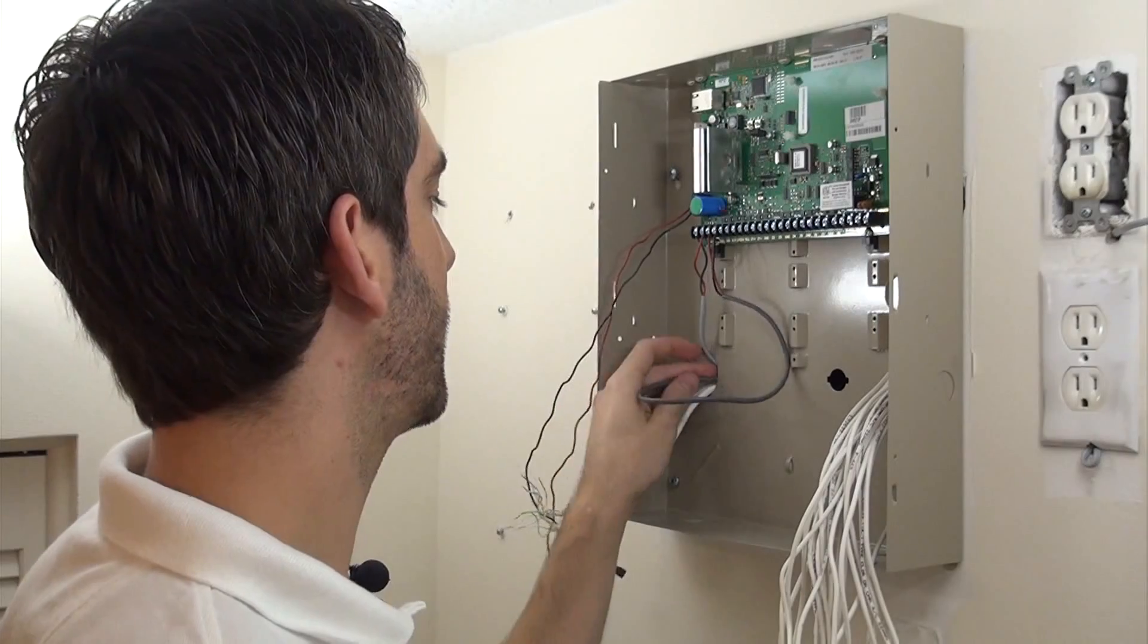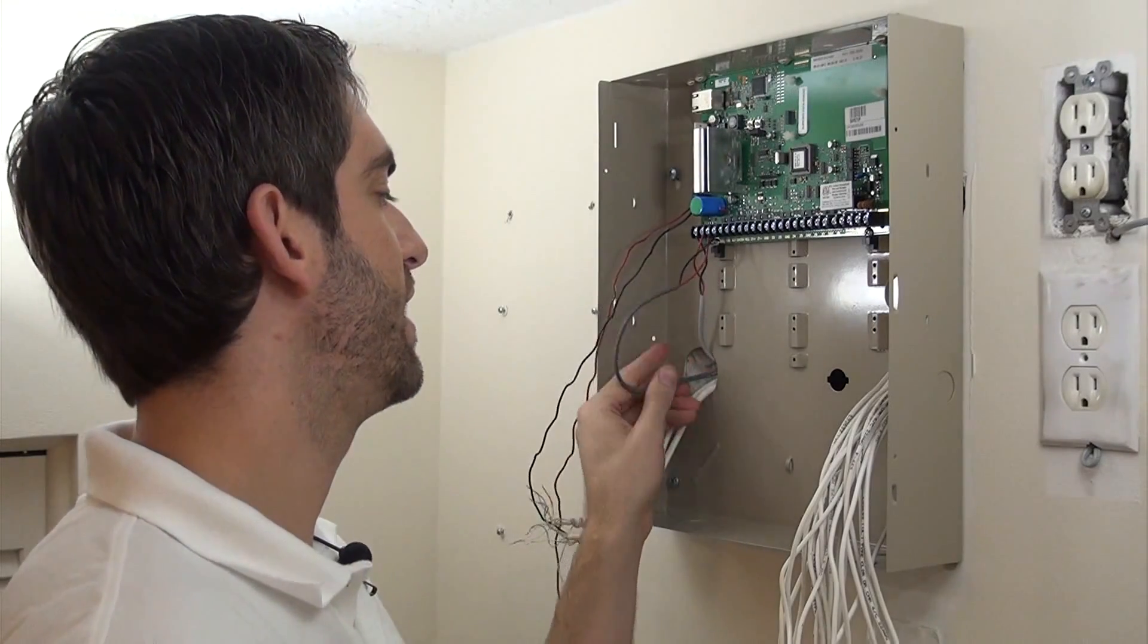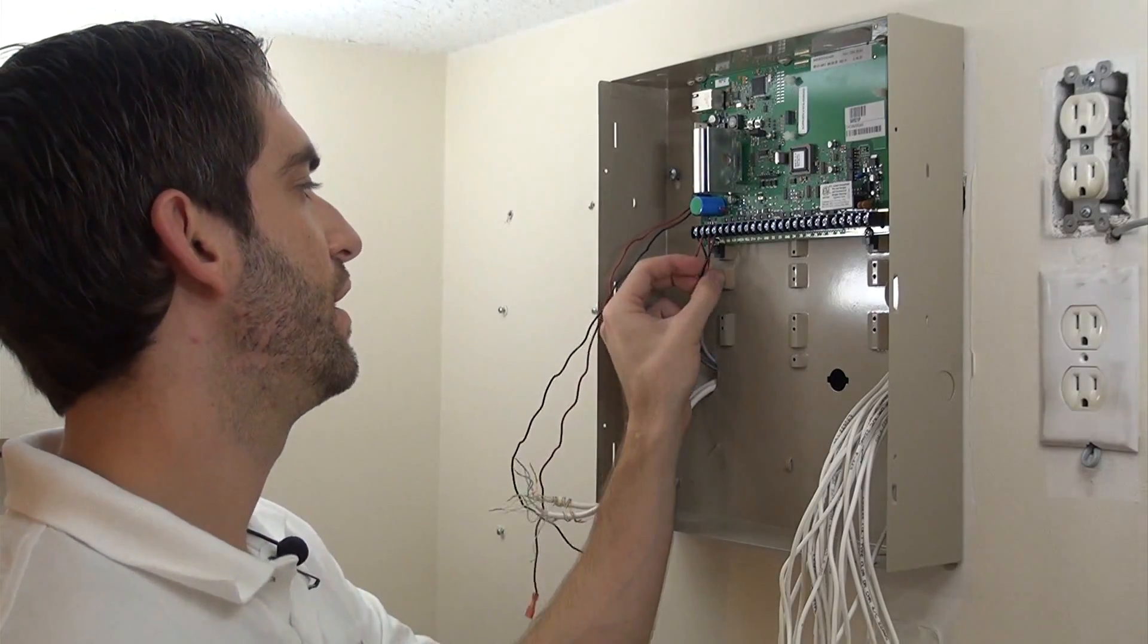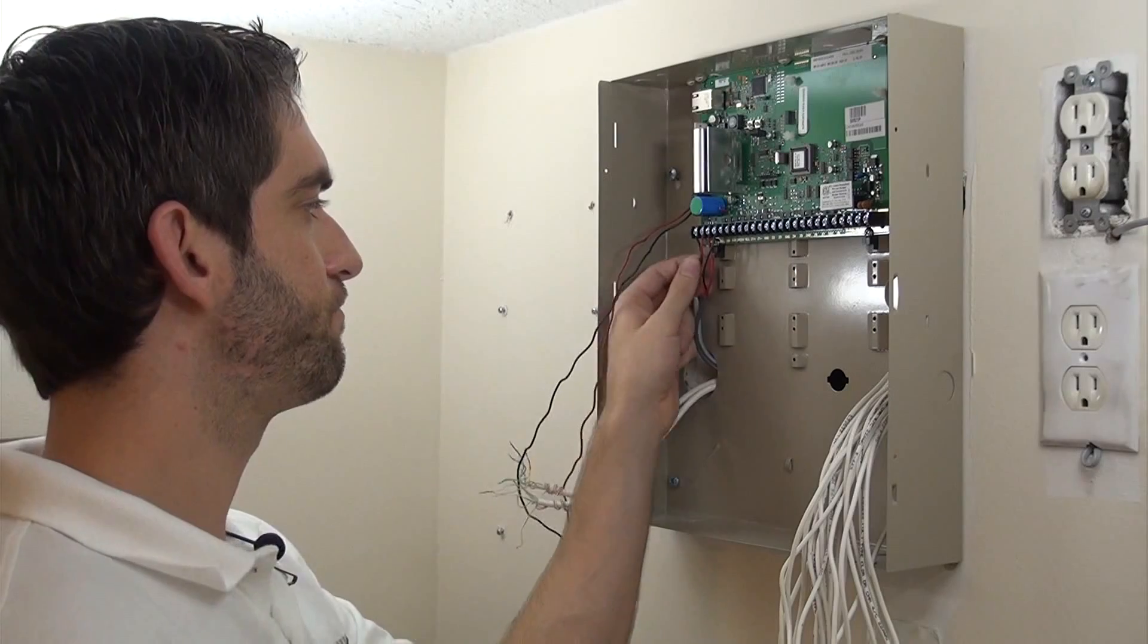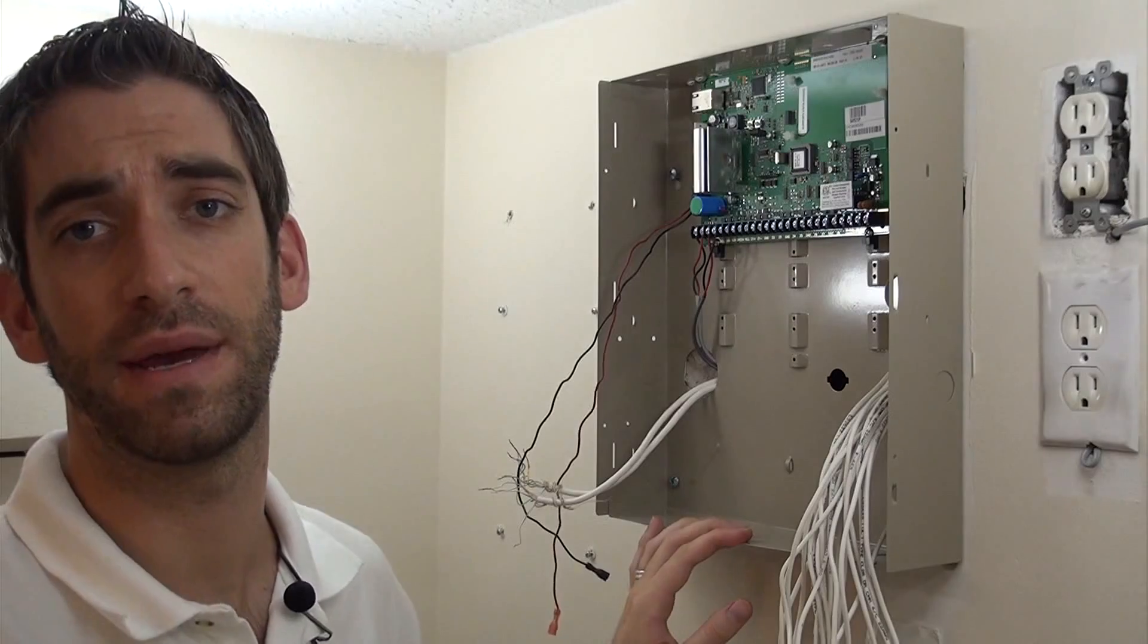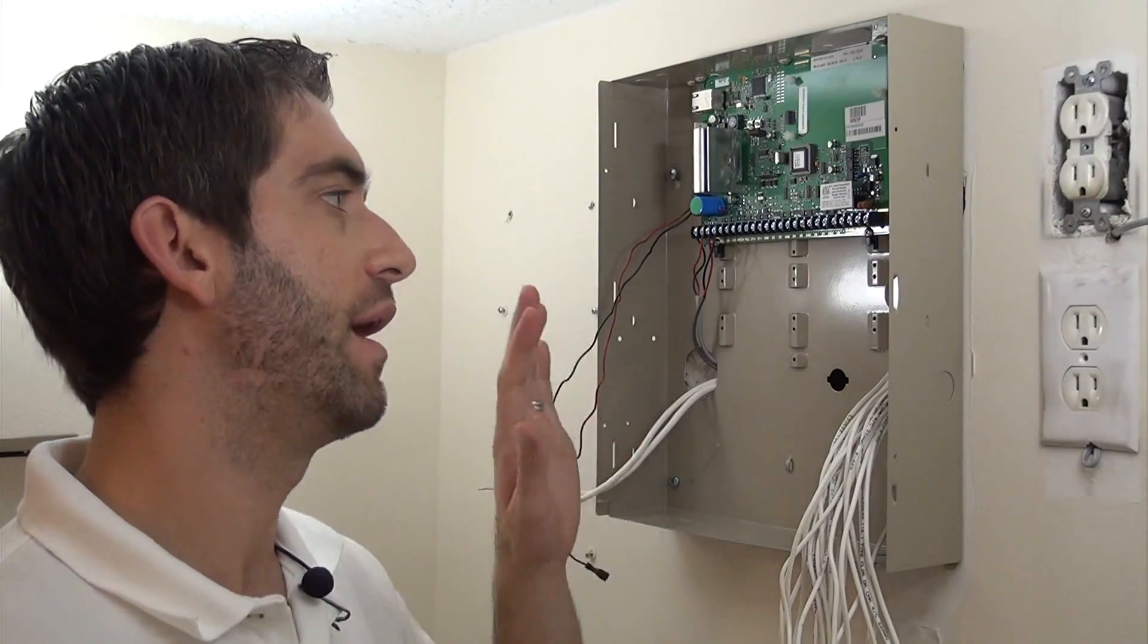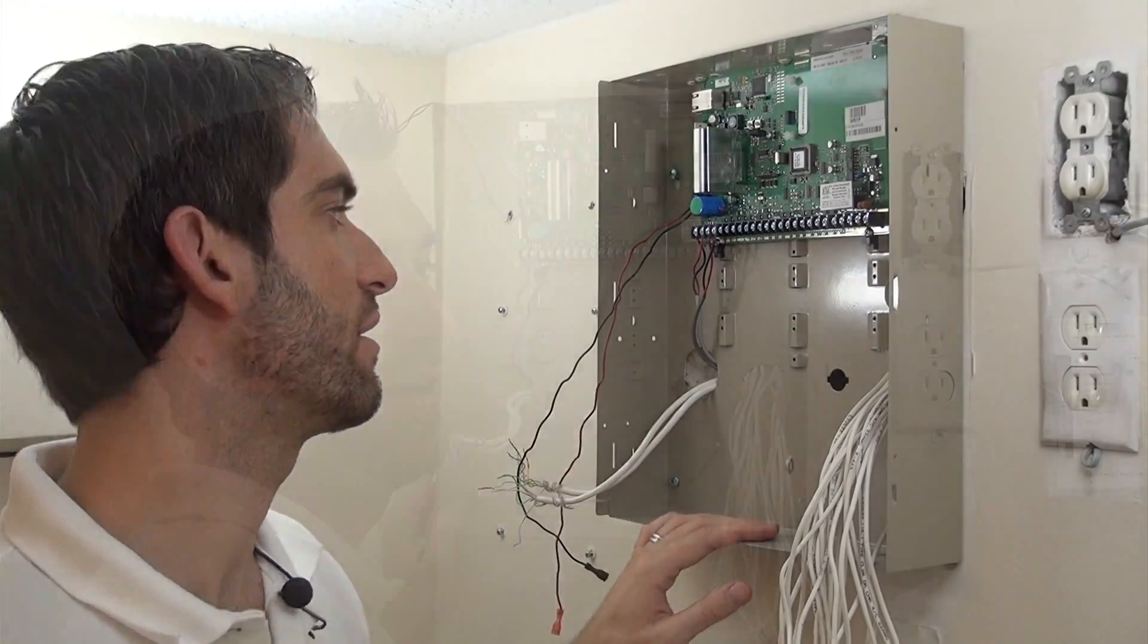Once we get everything connected, if that siren is not going to be loud enough, we can always add in an extra wired siren, a 712 or a 702, nice loud sirens. Those are Honeywell model numbers. Otherwise, we can go ahead and add a wireless siren, might make it a little bit easier, 5800 Wave. That one just simply plugs into an outlet. But we're going to deal with getting all the zones connected, keypads, and then we'll look at that later.